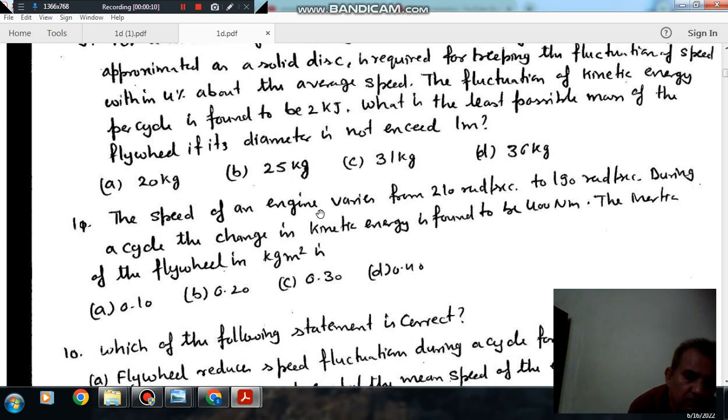Question number 11 is, speed of an engine varies from 210 radian per second to 190 radian per second during a cycle. The change in the kinetic energy is bound to be 400 Nm. The inertia of the flywheel is in kilogram meter square.